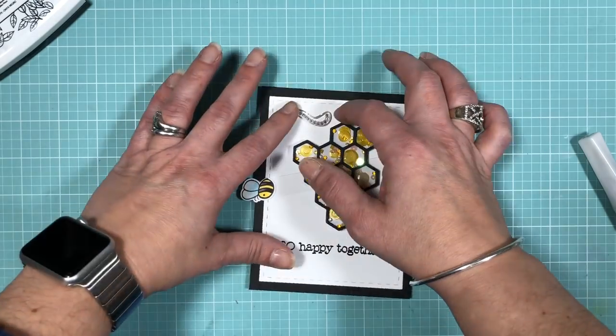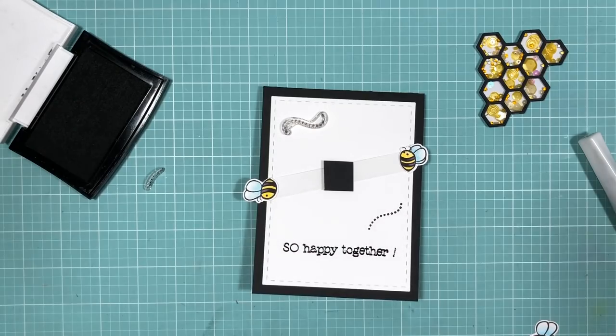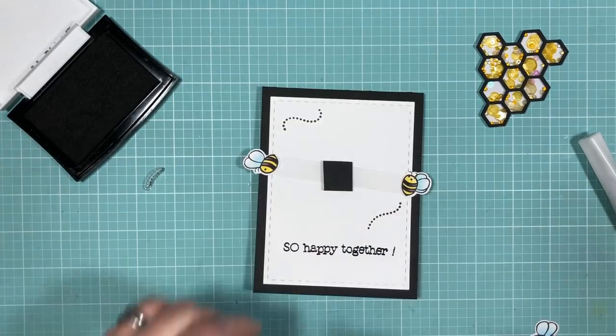Before gluing down the shaker portion, I thought it'd be fun to add these little bee trails. This will indicate that the bees are flying and it'll just add to the movement of the card.